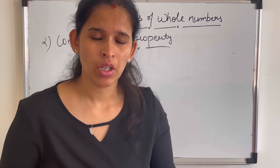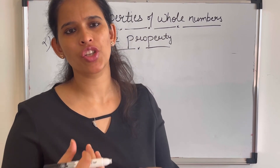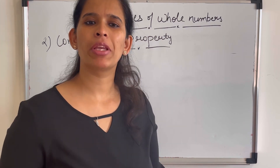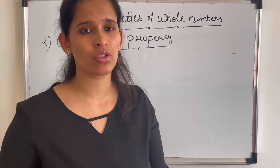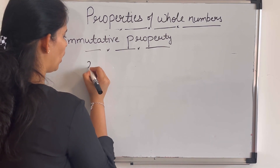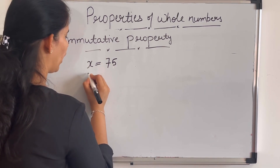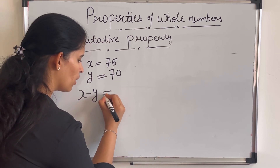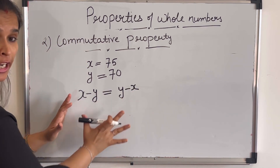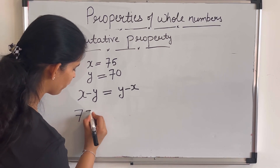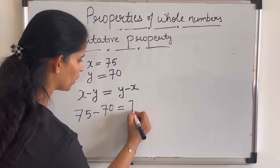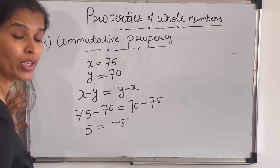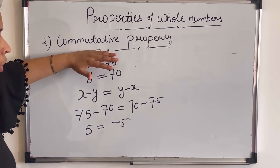The next property is the commutative property. Commutative means what will happen if we interchange our numbers. In addition, if we interchange positions the result remains the same, but we need to check if this applies in subtraction. Let x be 75 and y be 70. Commutative means: will x minus y equal y minus x? So 75 minus 70 gives 5, and 70 minus 75 gives minus 5. The values are different, so the commutative property does not hold in subtraction.